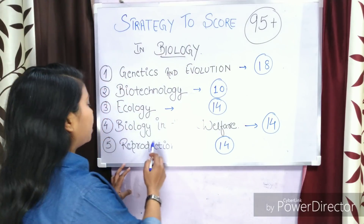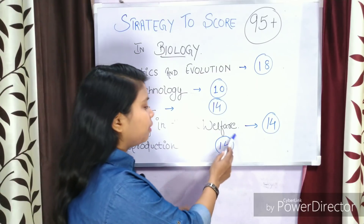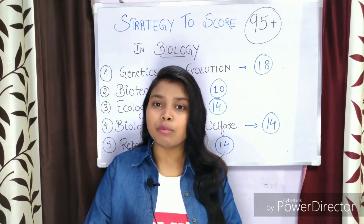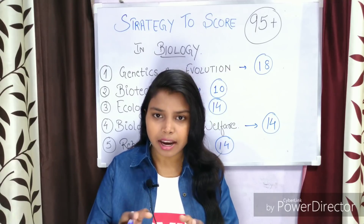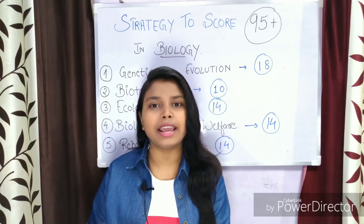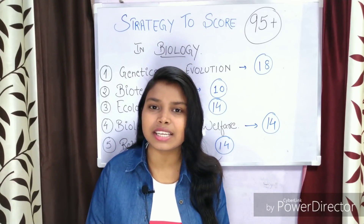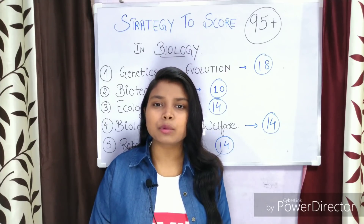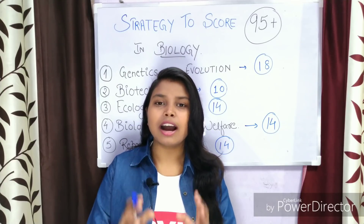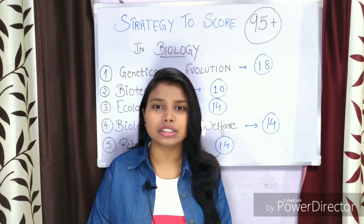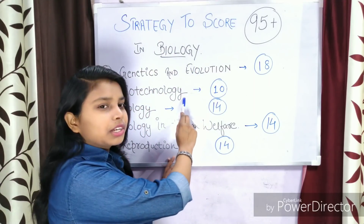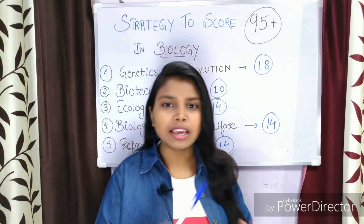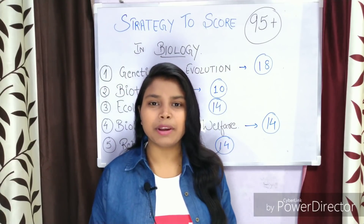The last unit is reproduction, which carries almost 14 marks. It is the most simple and easy unit and you can secure those 14 marks if you follow these tips. All notes are provided on the channel — you can download them and begin preparation. So the order is: first genetics, then biotechnology, then ecology, then biology and human welfare, and lastly reproduction. Prepare according to marks and weightage.